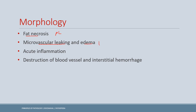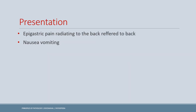In morphology of acute pancreatitis: fat necrosis is present due to phospholipase; microvascular leaks and edema occur due to IL-1 and IL-6 (high yield); acute inflammation with neutrophils is present; elastase damages blood vessels causing interstitial hemorrhage; and Factor XII activation leads to thrombosis.